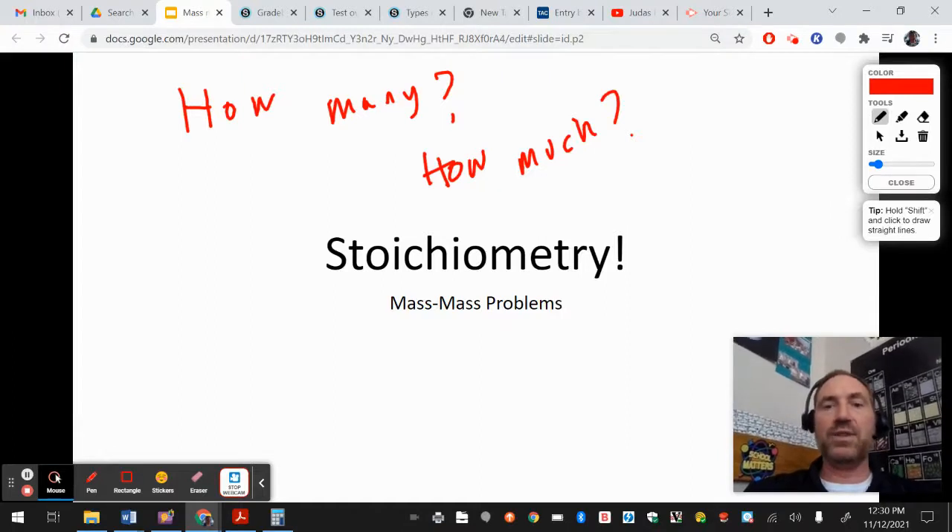Let me get my pen. Stoichiometry is defined as basically taking all of the stuff we've learned about balancing equations and applying it to moles. It's a bunch of how many or how much questions. So we are going to answer how many, how much, using a balanced chemical equation and moles.